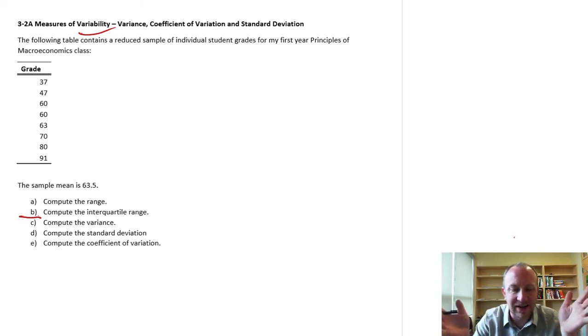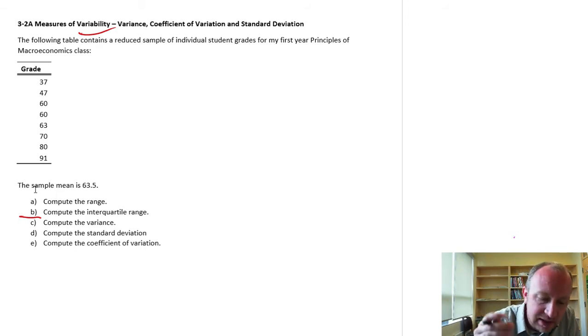So what we have here, I've taken a reduced sample of student grades for first-year principles of macro class. I'm going to try to start keeping my samples small, because going through these calculations now, they can be really long and tedious. So we'll work with unrealistically small samples just to keep the math as simple as possible and as quick as possible.